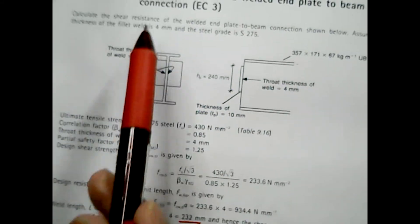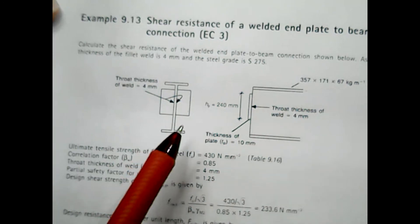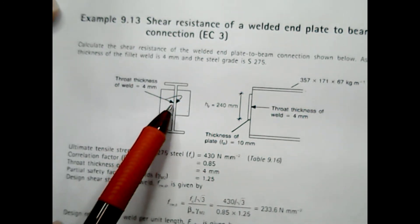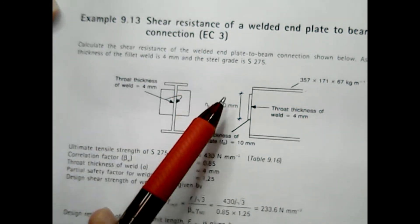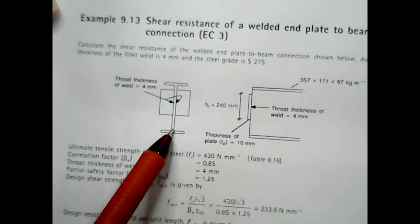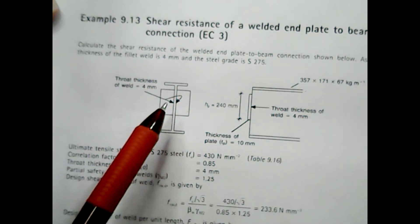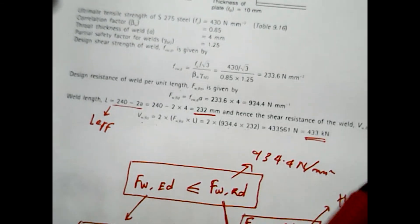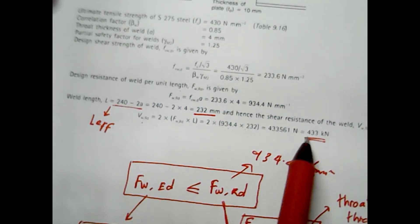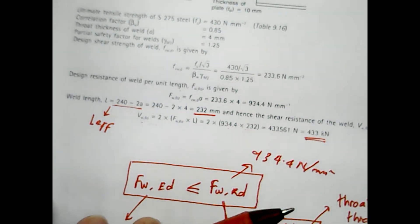To conclude this example, we can now say that for this particular configuration of connection, it is supposed to be able to resist the shear resistance of 433 kilonewton.